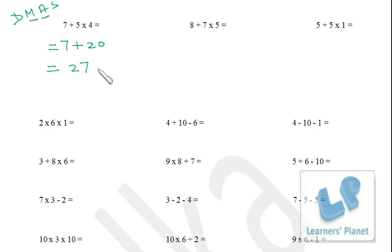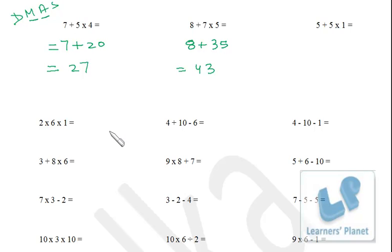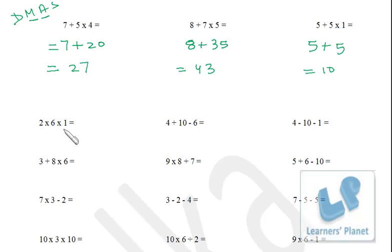Next: 8 plus 7 into 5. Perform multiplication first: 7 into 5 is 35. Then 35 plus 8 equals 43. Next: 5 plus 5 into 1. Multiplication first: 5 into 1 is 5. Then 5 plus 5 equals 10. Next: 2 into 6 into 1. Only multiplication here, so 2 into 6 is 12, and 12 into 1 is 12.